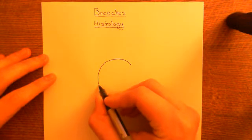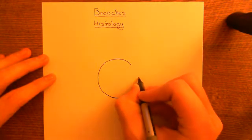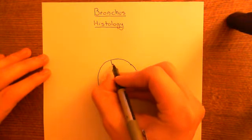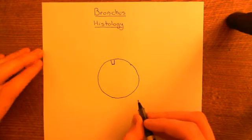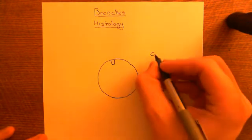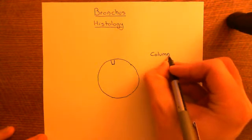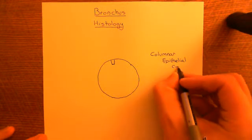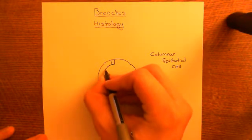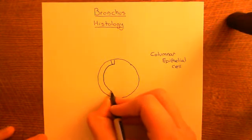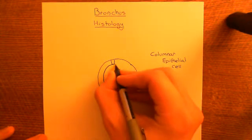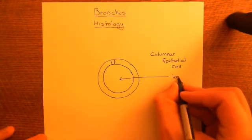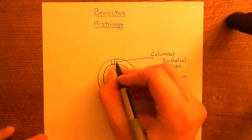This is the basement membrane on which the epithelial cells are going to sit. The epithelial cells on the surface of bronchi are what are known as columnar epithelial cells. You have a layer of columnar epithelial cells all the way around the lumen of the bronchus — the centre here is the lumen of the airway, where the air will actually be.